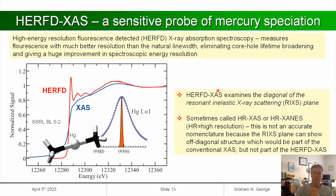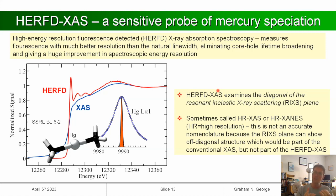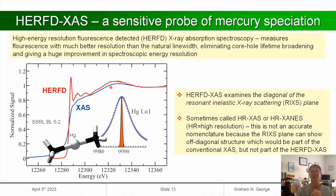Then there's HERFD-XAS — high energy resolution fluorescence detected XAS. This fancy technique gives us much more sensitivity for fingerprint speciation of mercury. Here's a comparison for dimethylmercury: the conventional XAS is in blue and the HERFD-XAS in red. The HERFD-XAS is needle-sharp compared to the ordinary XAS, making it a really lovely technique for speciation of mercury chemical forms in situ.